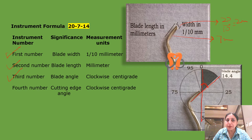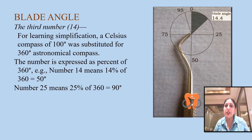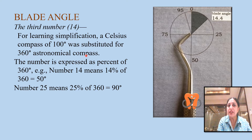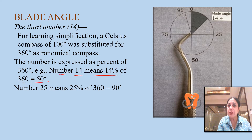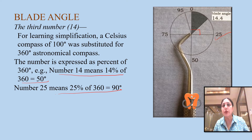The fourth number, if present, is the cutting edge angle and it is also measured in clockwise centigrade. Now let me explain the concept of clockwise centigrade. You know that a circle is 360 degrees. For learning simplification, the astronomical compass of 360 degrees was substituted by a celsius compass of 100 degrees. So the circle is divided into 100 parts: 0, 25, 50, and 75. Whatever the angle turns out to be, it is expressed as a percentage of 360 degrees. For example, number 14 means 14 percent of 360, which is 50 degrees. If it was number 25, then it would be 25 percent of 360, or 90 degrees.